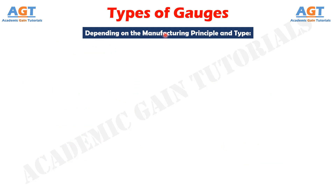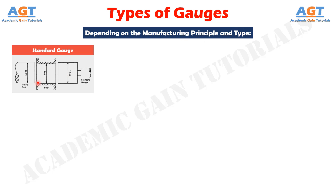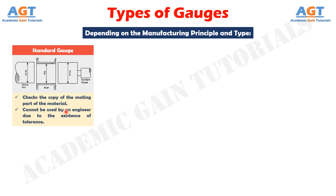Depending on the manufacturing principle and type: Standard gauge. A standard gauge can be defined as the measuring tool that checks the copy of the mating part of the material. This gauge cannot be used by an engineer due to the existence of tolerance in a workpiece.